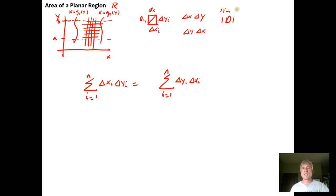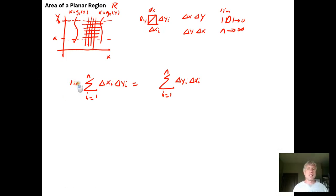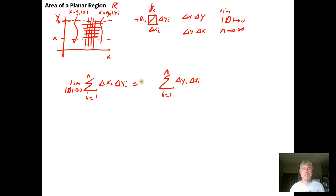We then take the limit as the size of the largest diagonal goes to zero. As the diagonals go to zero, the number of squares goes to infinity, and this gives us the exact area of the region. As the norm goes to zero, N goes to infinity, the squares become infinitely thin, the width and height go to zero, and we call them DX and DY.